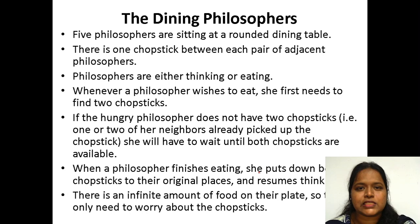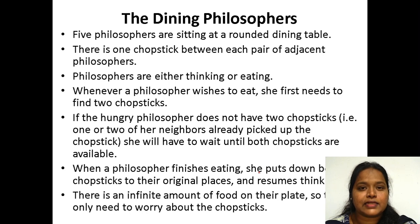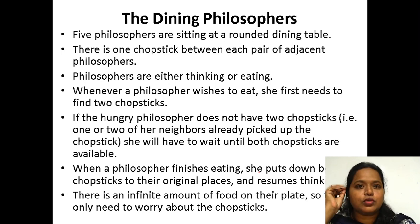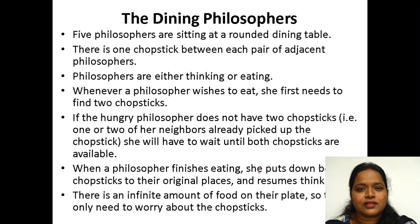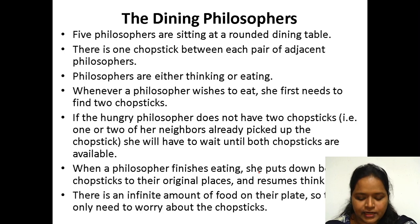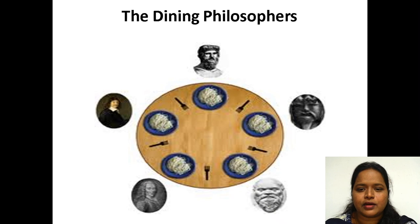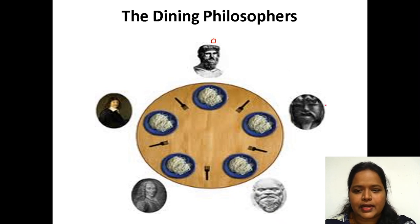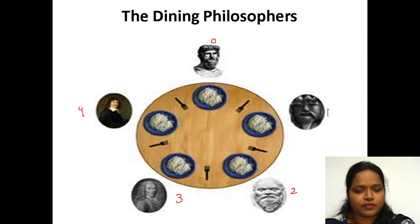The main concept of the dining philosophers problem is that five philosophers sit around a rounded dining table. The task of these five philosophers is eating and thinking. If they are eating, they are not thinking; if they are thinking, they are not eating. They will be doing only either of these two tasks. Here are the five philosophers sitting: the 0th, 1st, 2nd, 3rd, and 4th philosopher.